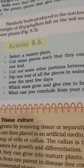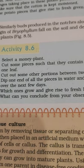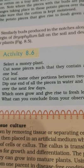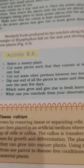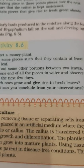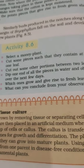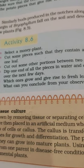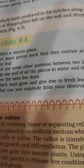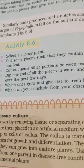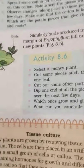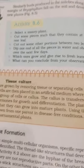Another activity involves a money plant. We cut the money plant into pieces and every piece should have a leaf. When we dip those pieces into water, after some days we observe that new leaves are arising from those pieces. That is also an example of vegetative propagation.